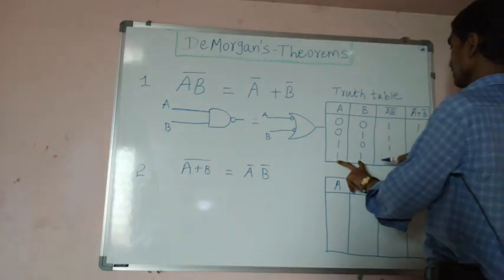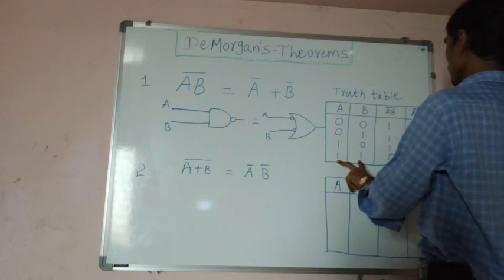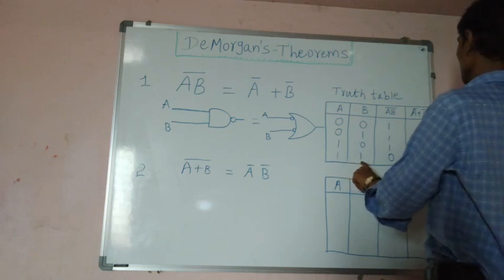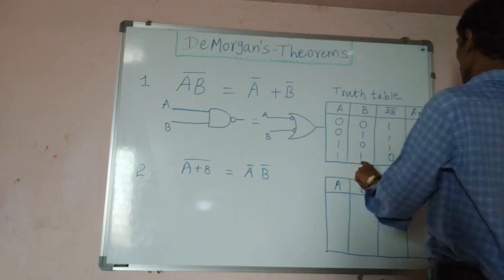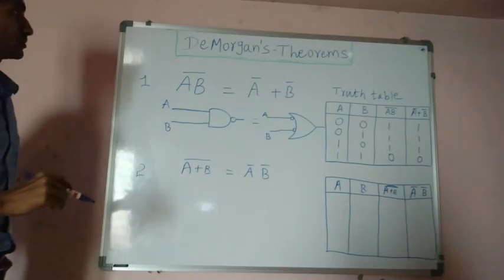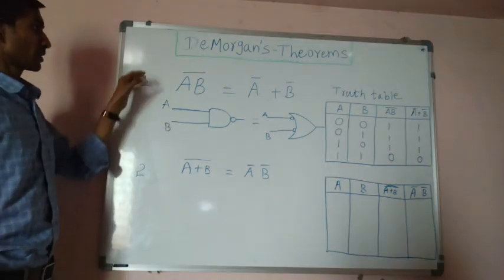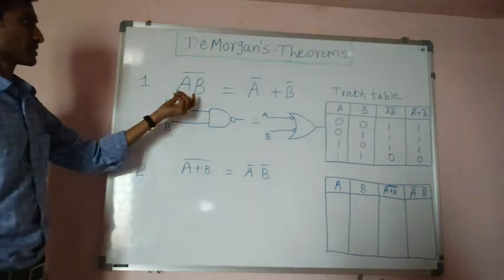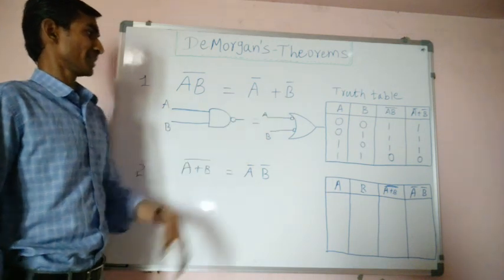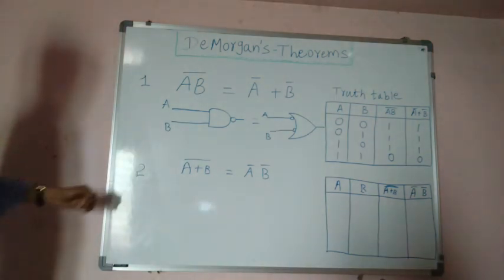For input 1,1: product is 1, complement is 0. Individual complements are 0 and 0, addition is 0. This is the truth table for the first theorem — De Morgan's first theorem. It states: complement of product of two variables equals the sum of complement of the variables. That is the corresponding diagram.